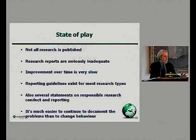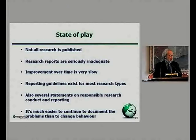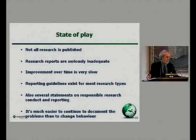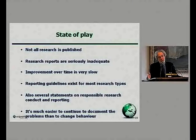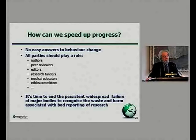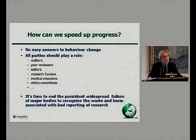The situation is: not all research is being published; those reports that are published are seriously inadequate on many occasions; improvement is seen but very slow. We have reporting guidelines for most types of research and statements about responsible research conduct, but it's much easier to continue documenting the problems than to change people's behavior. My title asked how we can speed up progress — though I realized I didn't really know the answer to that question.